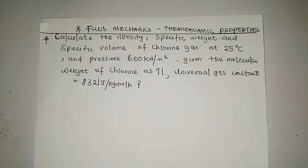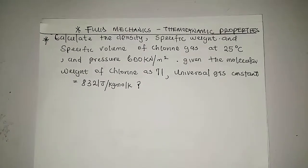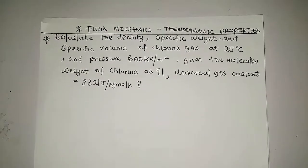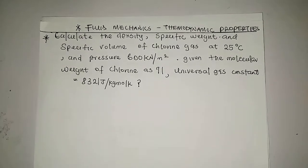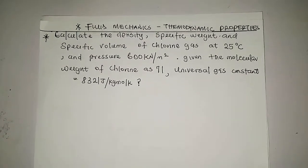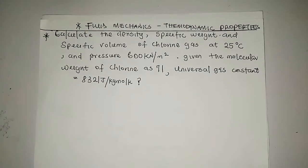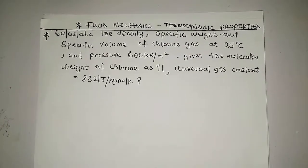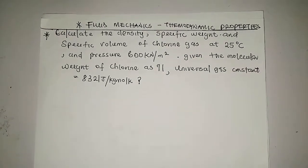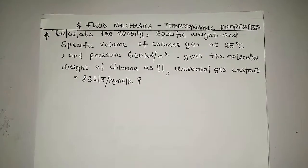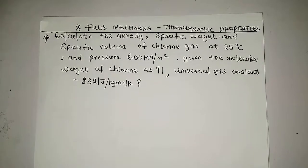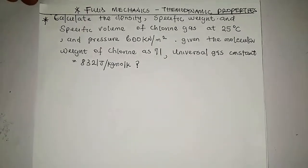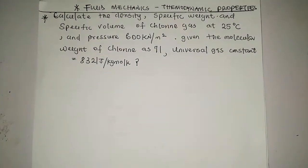We are asked to find the density, the specific weight, and specific volume of chlorine gas at 25 degrees Celsius and a pressure of 600 kilonewton per meter square, given the molecular weight of chlorine as 71 and the universal gas constant as 8321 joule per kilogram per mole per kelvin.